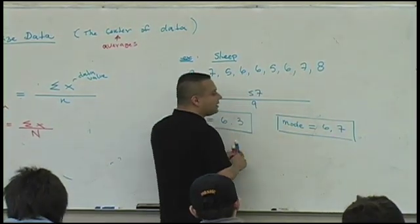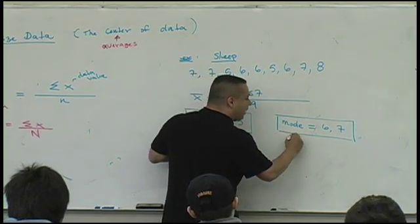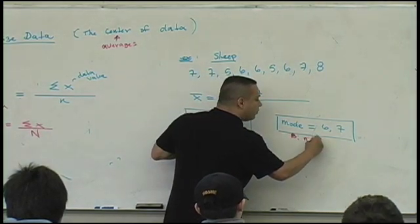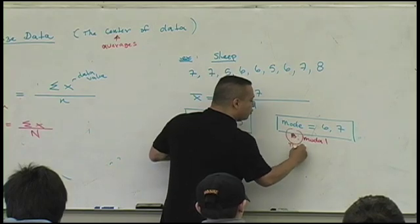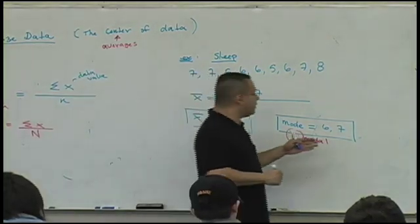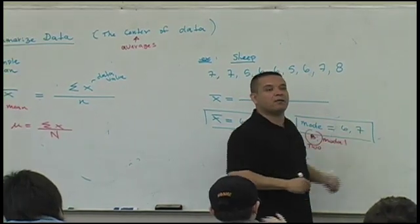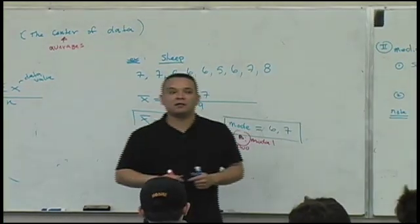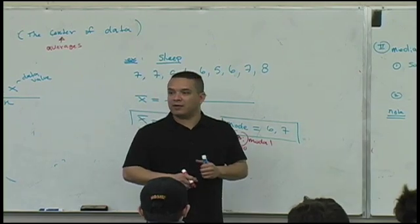Here, the mode is six and seven. This is known as a data set that is bimodal. What does that mean, bimodal? Bi meaning what again? Two. Two modes. What if you had three data values that were the most equally popular? Then your data set is trimodal.